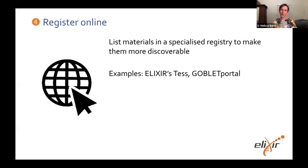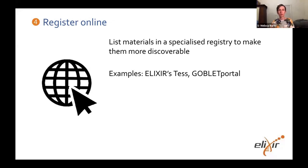Step four is to register your materials online. This might sound like the same thing as step one, but it is actually slightly different. In step one we're talking about getting your materials out there — uploading them somewhere. This step is more about collecting materials on the same topic together into a registry — telling a website that you have materials out there and where to find them. For bioinformatics, there are a couple of examples: Elixir's TeSS and the Goblet portal for training materials. They aggregate different training materials together into one place so they're easier to find, then link out to where they are stored.